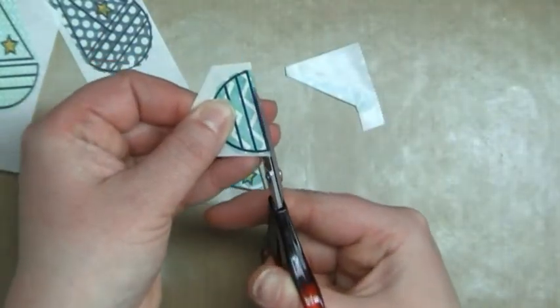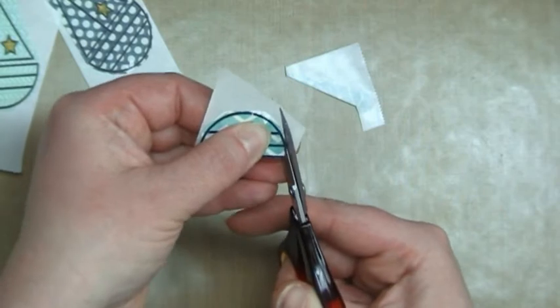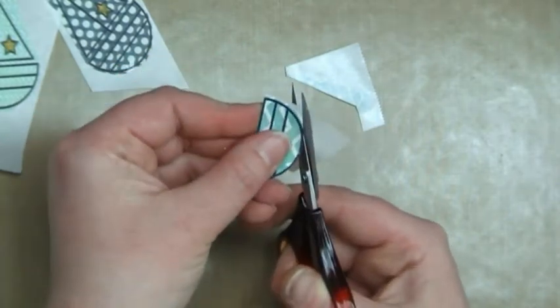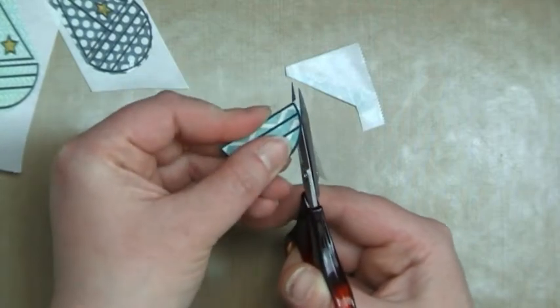One tip I can give you for going around the curve on the bottom here is I tend to move the paper more than the scissors. I keep the scissors fairly stationary and just move the paper as I go. It just seems to make it a little bit easier for me.